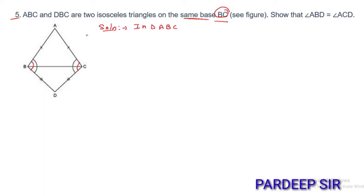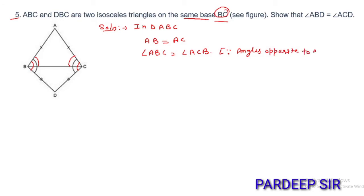In triangle ABC, since it is isosceles, AB is equal to AC. If opposite sides are equal, then opposite angles are also equal, so angle ABC equals angle ACB. Take this as equation 1. Reason: angles opposite to equal sides are equal.